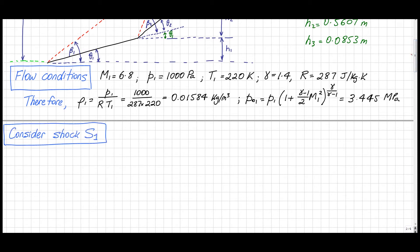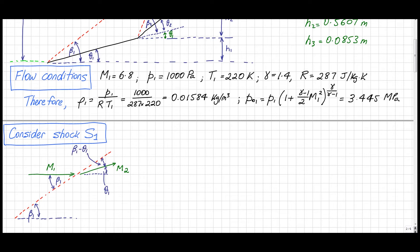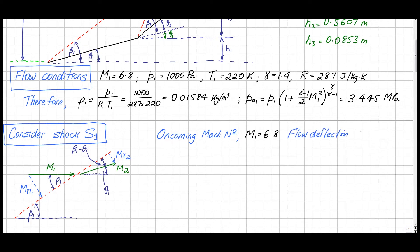We're interested in shockwave S1. Let's do a sketch of its geometry. There's the shockwave, and it's at angle β1 to the oncoming flow. There's the oncoming Mach number M1 and the Mach number downstream of the shockwave M2. From the geometry, the angle is β1, this angle is θ1, so this angle is β1 minus θ1. We put in our normal components of Mach number, Mn1 and Mn2. Our oncoming Mach number M1 is 6.8, and the deflection angle θ1 is 8 degrees.